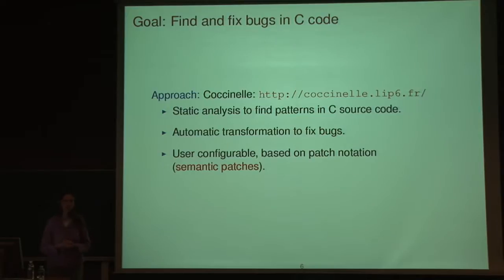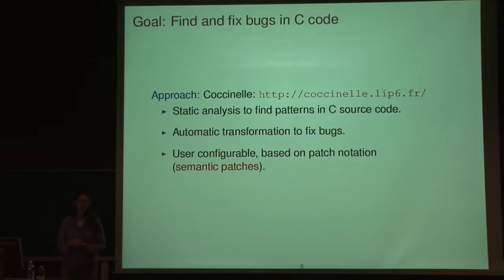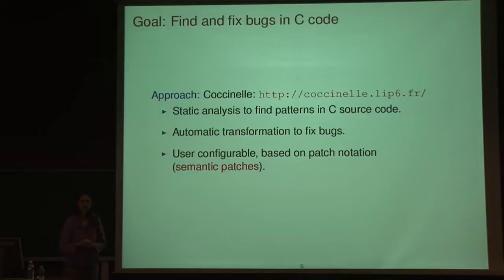Coccinelle has two features. One is we provide a static analysis that matches patterns in C code. The other feature is that we can also specify transformations. Once you write a pattern that recognizes a bug, you can express how to fix that bug as well. Even if it's a simple fix like adding two parentheses, perhaps you'd be happier having a tool do it so you can check the result rather than adding them yourself and perhaps making a mistake. The important point is that our approach is user configurable and is based on the patch notation — you write things that look like patches, that look like real code.